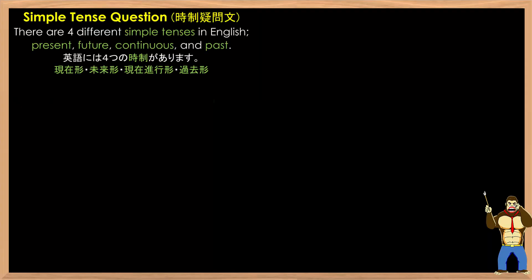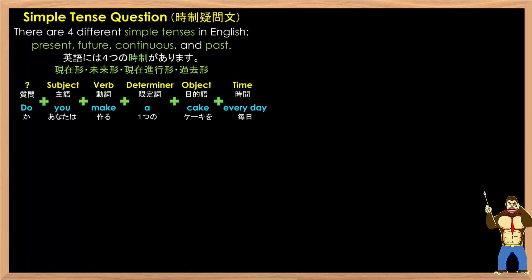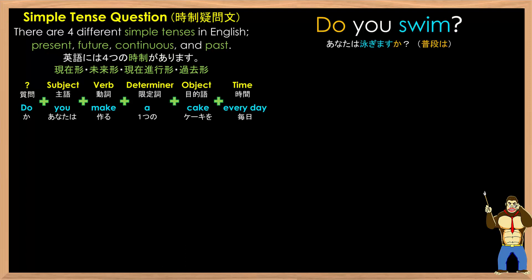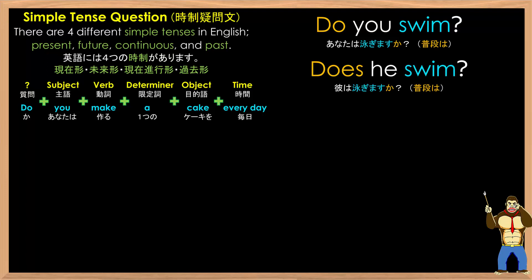There are four different simple tenses in English: present, future, continuous, and past. First, we have present tense, where you put 'do' at the beginning of the question, as in: Do you make a cake every day? For example: Do you swim? Now, depending on the subject, if the subject is he, she, or it, the 'do' changes to 'does', as in: Does he swim?